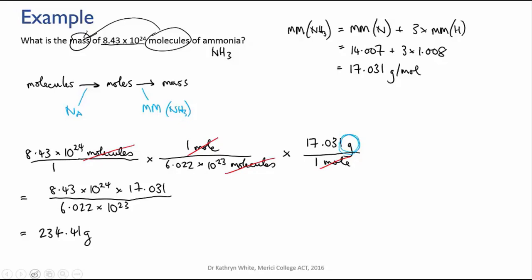Now am I finished? No, I need to check my sig figs. Go back to the original problem and find what is the lowest number of sig figs that you used. Here the number of molecules is 8.43 times 10 to the 24. That's three sig figs. The other values you used were Avogadro's number, but you have that to four sig figs, 6.022 times 10 to the 23. And the molar mass which you calculated from the values on the periodic table. Here you've calculated that to five sig figs.